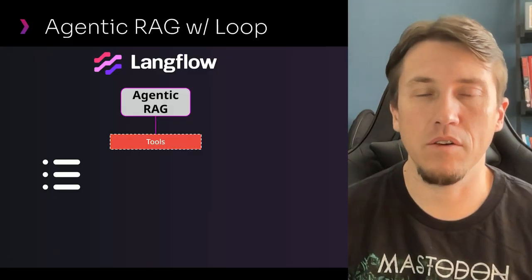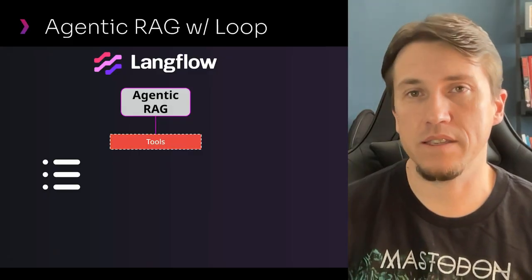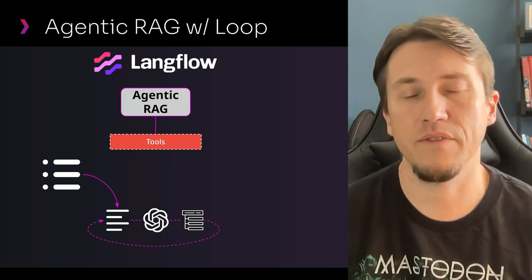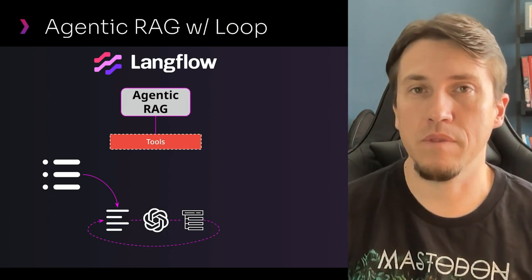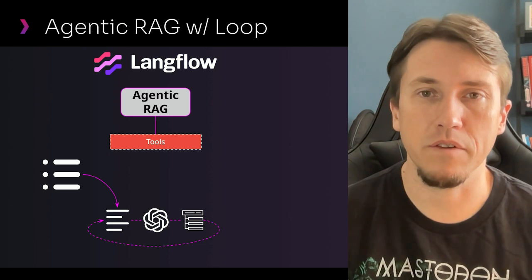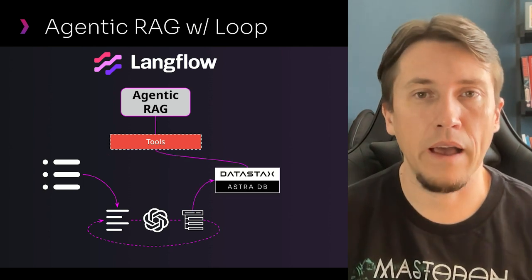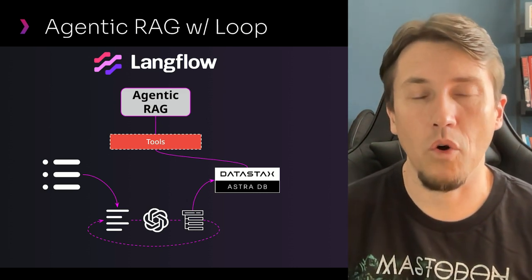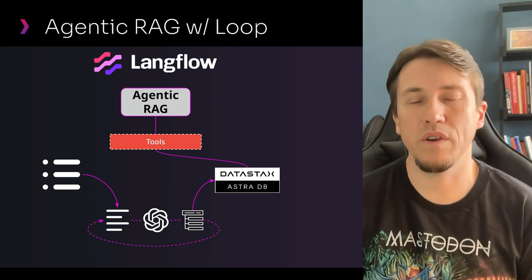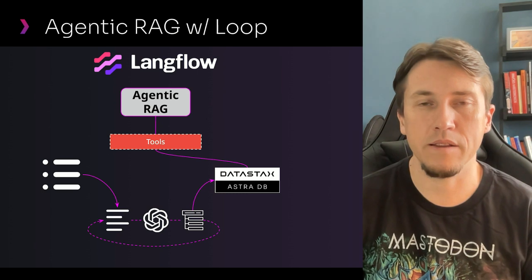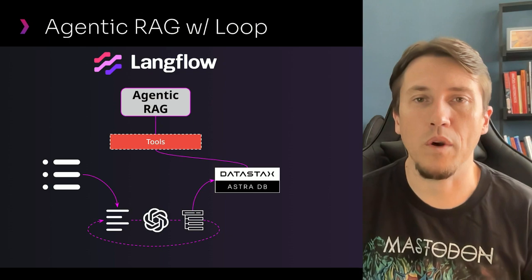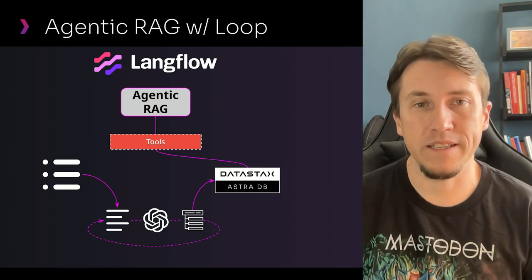In this video we will load data from a CSV file, extract some information from each post in that file, and store the results in AstraDB so we can create an agentic RAG flow. This will be a full demonstration from data extraction to an agentic RAG flow at the end.